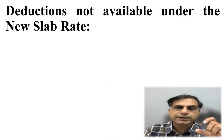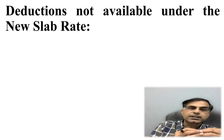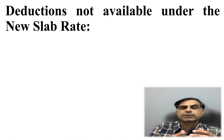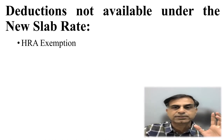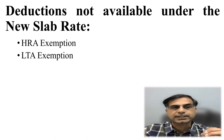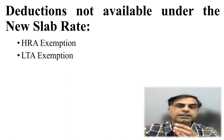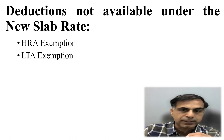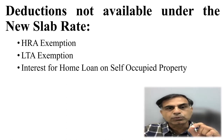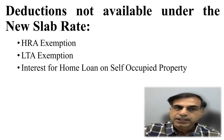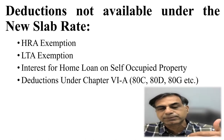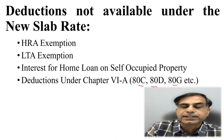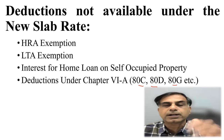The first point of this comparative difference is to understand the deductions which are not available under the new regime. HRA exemption is not available; LTA exemption is also not available; certain exemptions under Section 10(14) are also not available; interest on home loan for self-occupied property — for which assessees usually claim a 2 lakh rupee deduction — is also not available; and deductions under Chapter VI-A, whether 80C, 80D, 80E, 80G, 80U, etc., are also not available under the new regime.